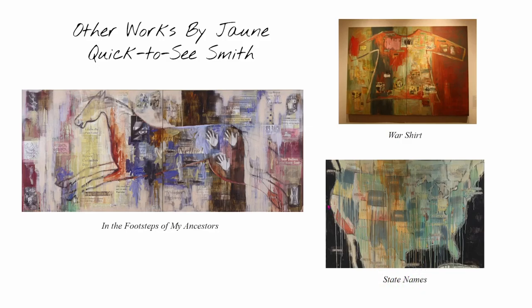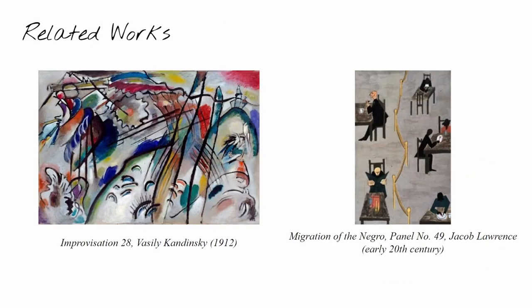Improvisation 28, which was made by Vasily Kandinsky in 1912, and Migration of the Negro, panel number 49, from Jacob Lawrence in the early 20th century, are both very similar to Trade. Improvisation 28 also features bold black lines with colorful splotches of paint that appear almost splashed or dripped on. The composition of Improvisation 28 is also very crowded and chaotic, much like that of Trade, and your eyes don't know where to focus since there is so much going on on the canvas. The Migration of the Negro is similar in terms of function, since both Trade and this work show the segregation of cultures, and also the white influence on the migration of groups of people.